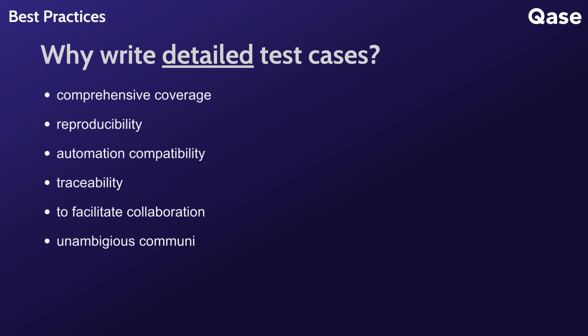Well-documented test cases reduce ambiguity and ensure that testing objectives are clearly communicated. Testers can convey precise information about the steps to be executed, expected outcomes, and any specific conditions or data requirements. The detailed nature of test cases also allows for early detection of defects during the testing phase, making it easier for developers to understand, reproduce, and fix the problem.